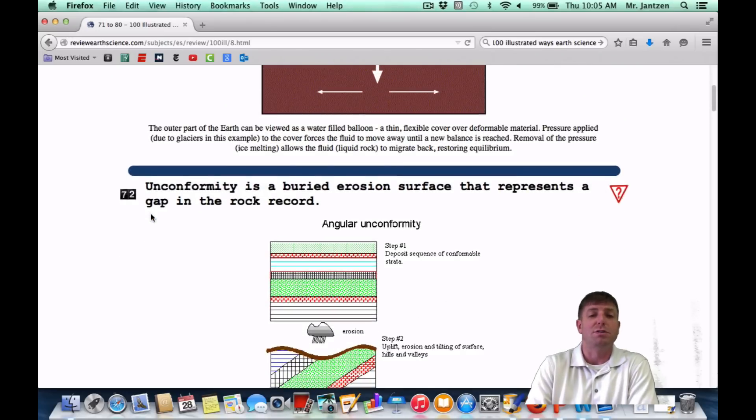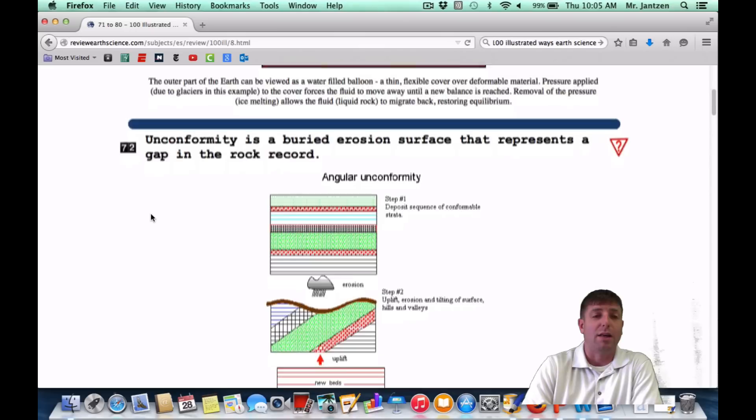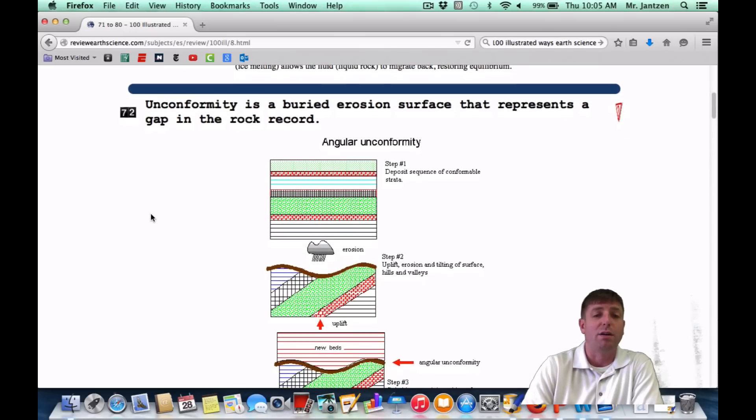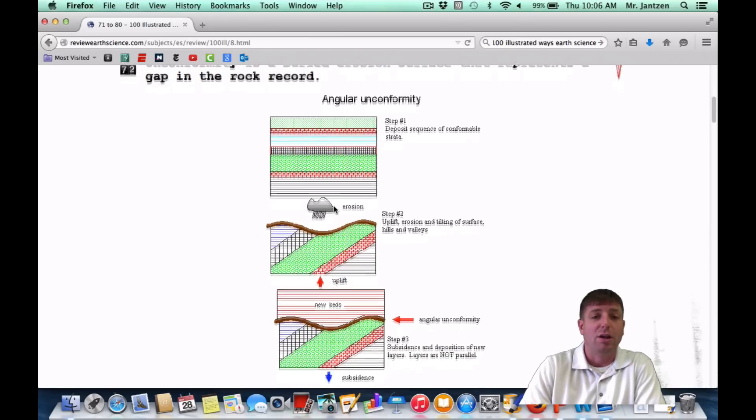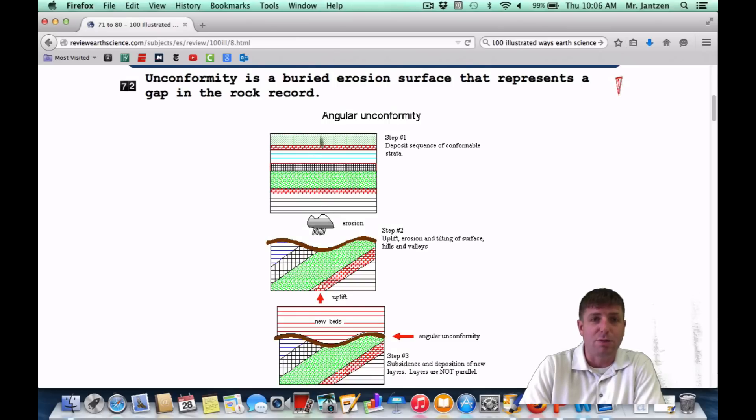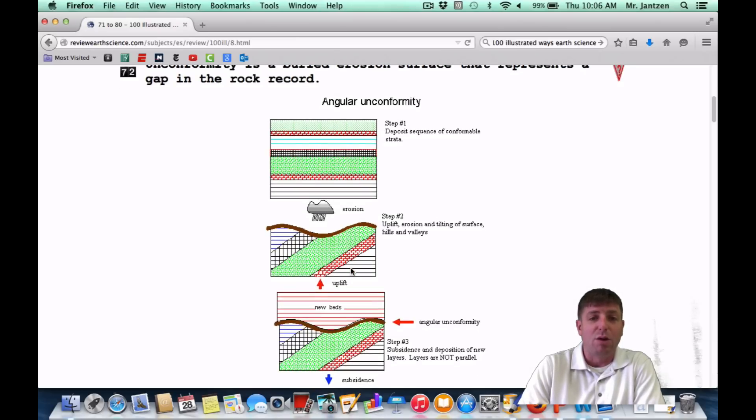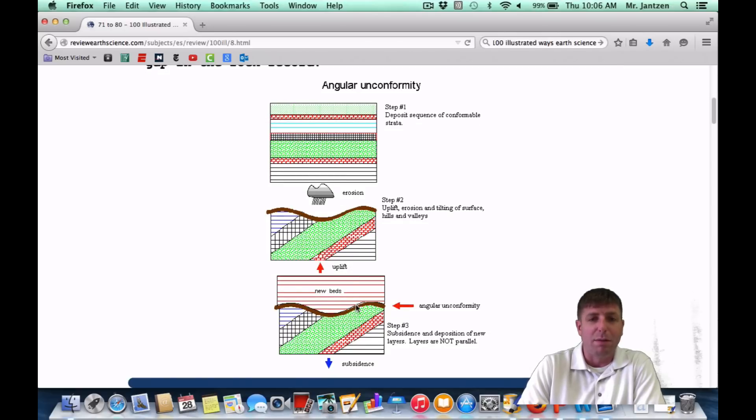An unconformity is a buried erosion surface that represents a gap in the rock record. That's a nice summary for what an unconformity is, a buried erosional surface. Well, what does that mean? It's kind of like when you have layers and those layers get pushed up. Once they get pushed up, they then become eroded away and then new layers are kind of put on top of them. So if you're looking at a cross section, it almost looks like a gap in the time record.